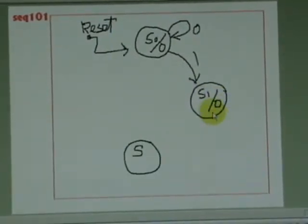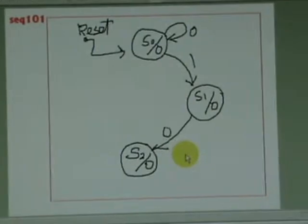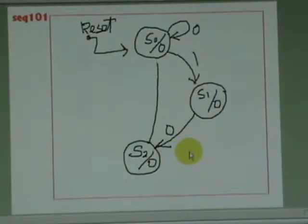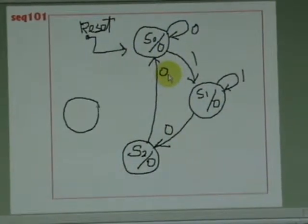From S1, it moved to S2 if the input is 0. And from S2, it returned back to S0 if the input is 0.